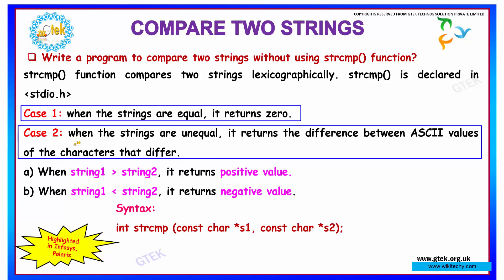If the string 1 is greater than string 2, then the value returned will be a positive value. If the string 1 is less than string 2, then the value returned will be a negative value.